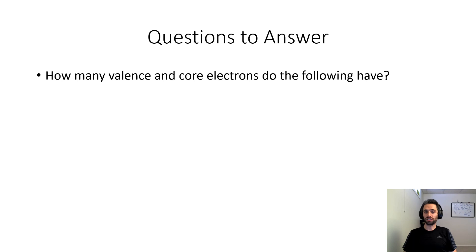From the information, you should be able to answer the following questions. How many valence and core electrons do the following have? Lead (Pb), bismuth (Bi), tin (Sn), barium (Ba).